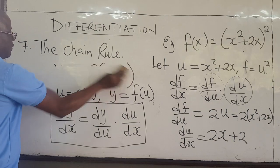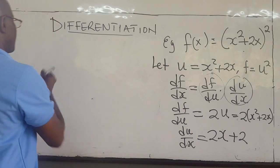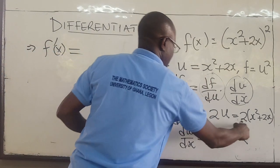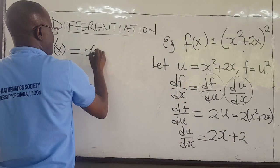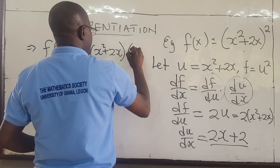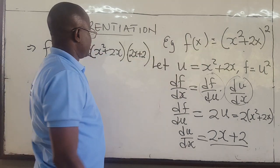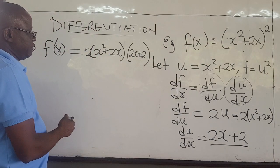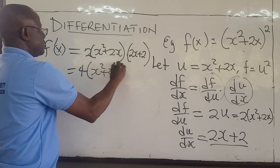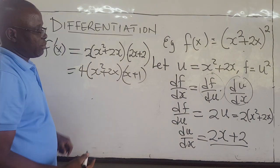So f prime of x, or df/dx, will be equal to df/du, which is 2 times x squared plus 2x, multiplied by du/dx, which is 2x plus 2. That is the derivative of this function. You could factor out 2 to get 4 times x squared plus 2x, times x plus 1. You can factor out x as well if you want. That is how you apply the chain rule.